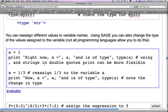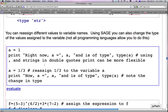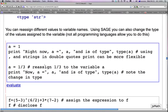So, you can reassign different values to variable names. Using SAGE you can also change the type of the values assigned to the variable. Not all programming languages allow you to do this. Here, a equals 1, and then we are simply having a long print statement. So, print is here, and we are printing this whole string, followed by a, which has been assigned 1, and then we put a comma, and then we are printing another string, and we are finally printing the type of a.